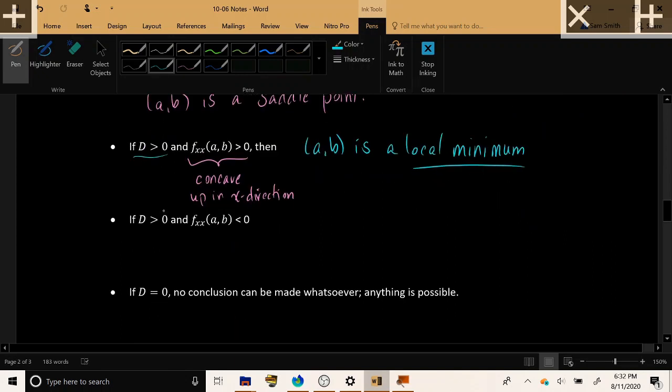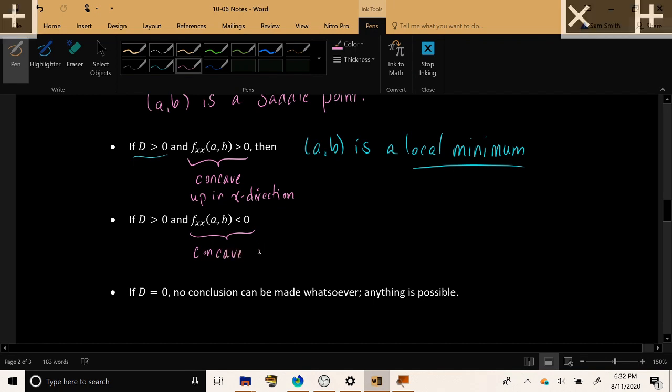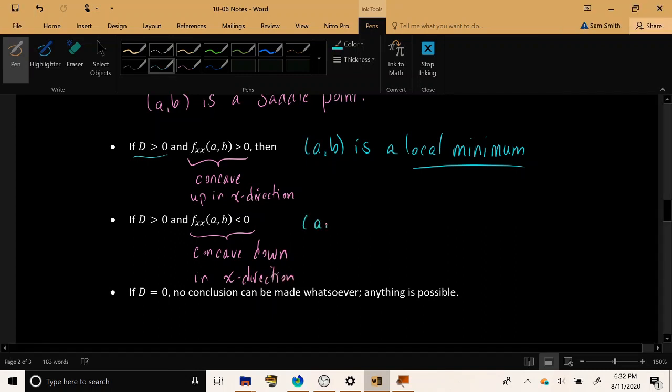Now, on the other hand, if your determinant is positive, and you check fxx, and you find that your function is concave down in the x direction, then you can say for sure that your point (a,b) is a local maximum.